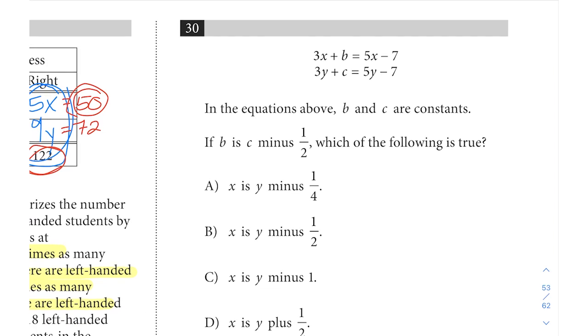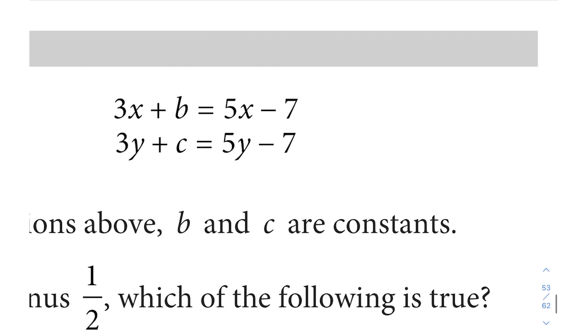Lastly for question 30, the last question of this section, we have 3x plus b equals 5x minus 7 and 3y plus c equals 5y minus 7. Before we even read through this question, there's actually a little bit of simplification we can do here by combining like terms, and that's always going to be beneficial to make things easier.